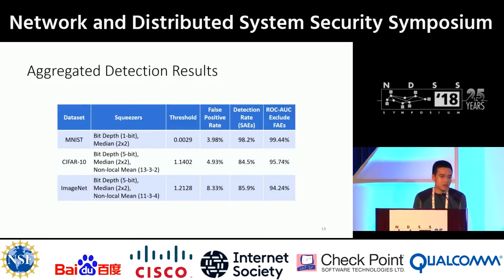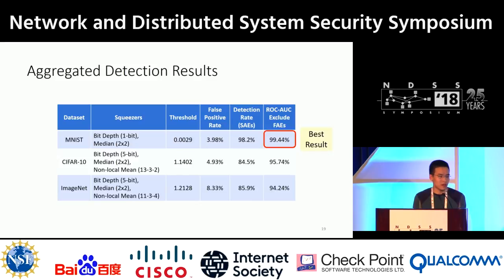The aggregated results on all three datasets are available in this table. We report the threshold values, false positive rates, detection rates, and ROC AUC scores. We found the best results on the MNIST dataset with the ROC AUC score very close to 1. We may be able to improve results on CIFAR-10 and ImageNet using other squeezers in the future.